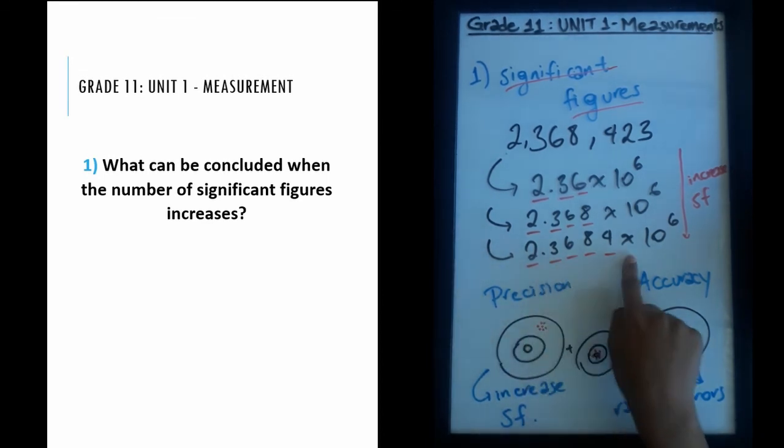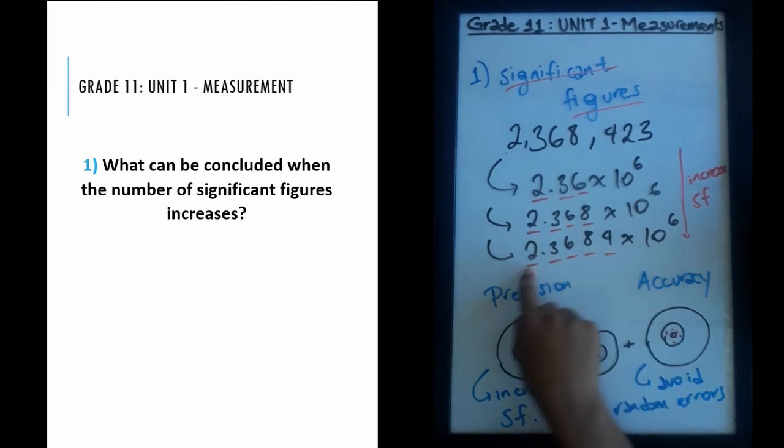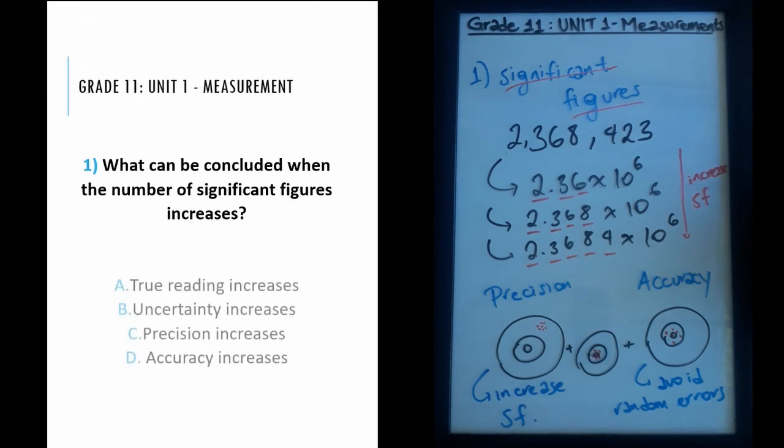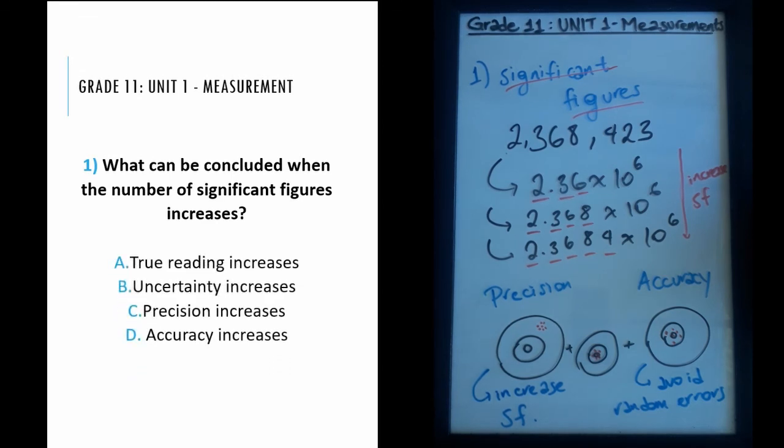Here, the maximum number of significant figures that I have make it the most precise measurement. So if we look at our choices now, we can see that our correct answer would be C: precision increases with the increase of significant figures. We have accuracy, we have uncertainty, and true readings, but none of these correspond as well as precision does in increasing significant figures.